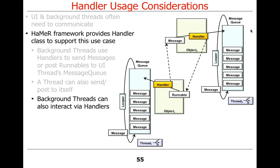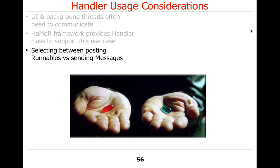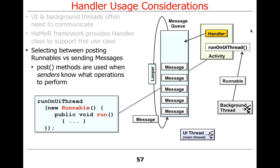Background threads can also interact via handlers — they don't have to be the UI thread. When deciding to use a runnable versus a message: typically you use post methods or the run-on-user-interface-thread method, which is just a front end to post. These are used when senders know the operation they want to perform — if the sender knows what needs to be done, you use a runnable by defining an anonymous inner class with a run method.